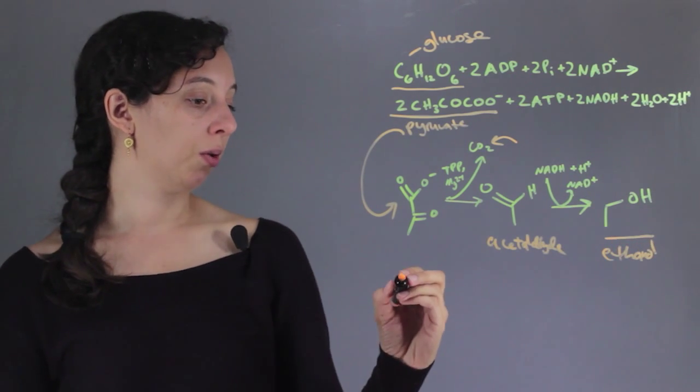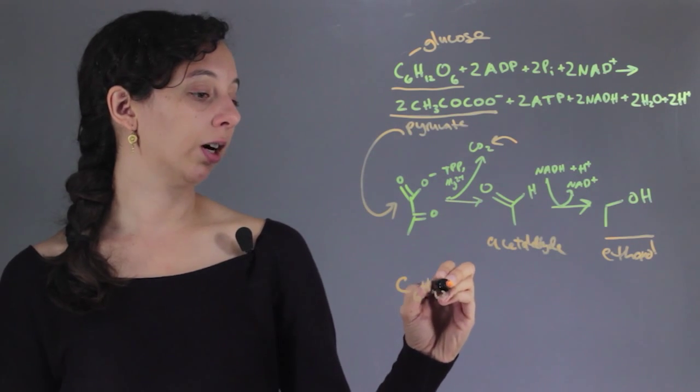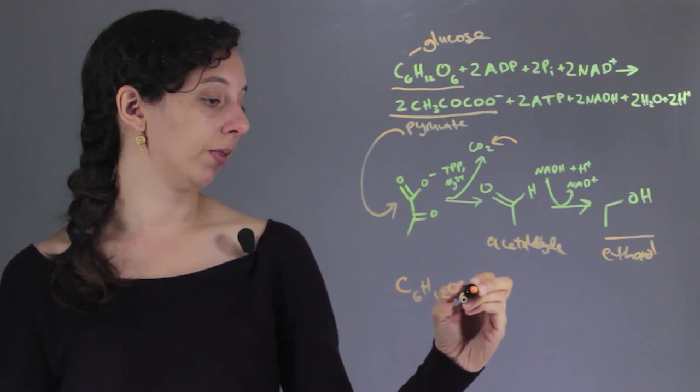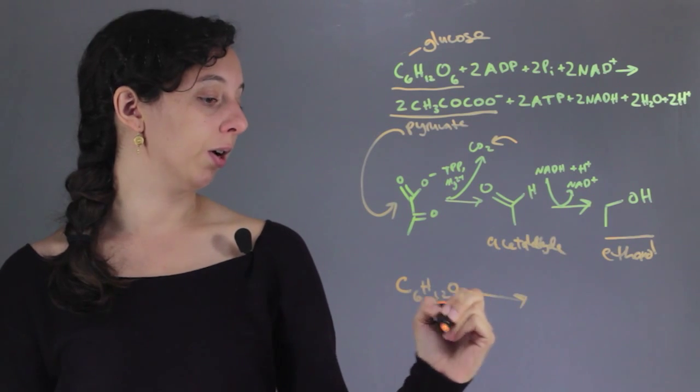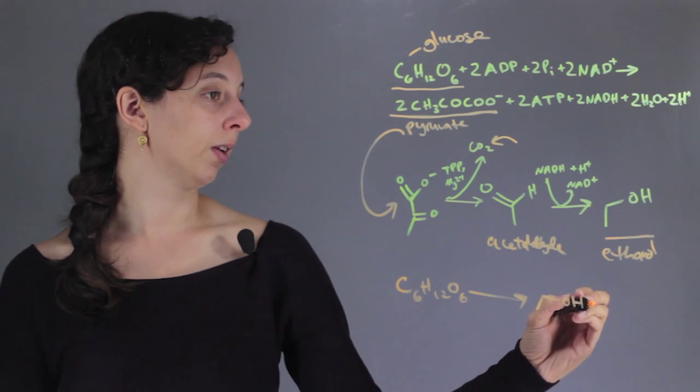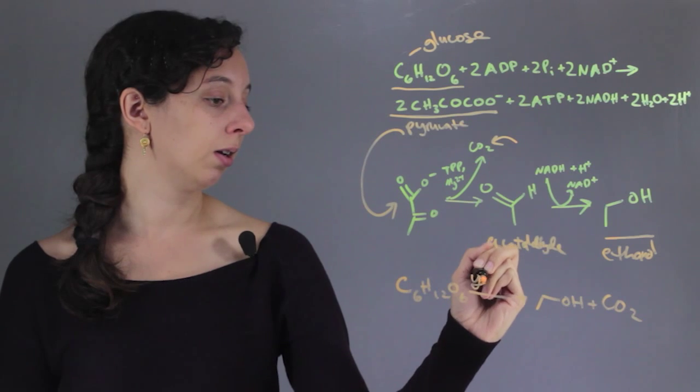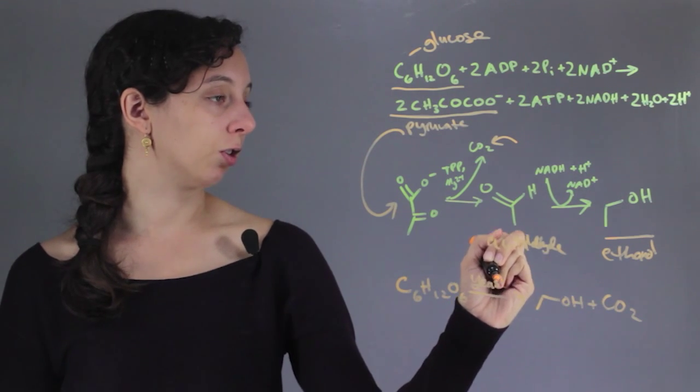So in summary, what you're basically doing during fermentation is taking sugar or glucose and reacting it to form ethanol and carbon dioxide. And to do this, you need yeast and a bunch of biological reagents.